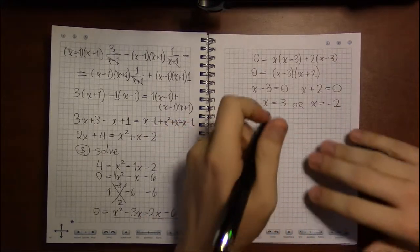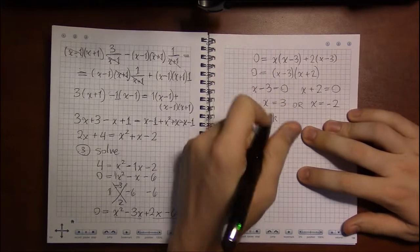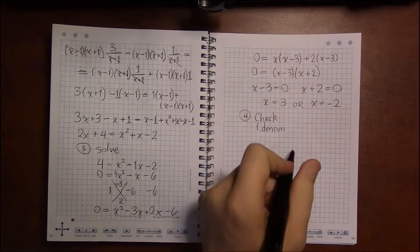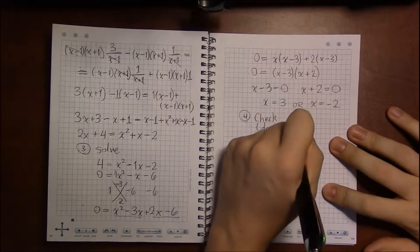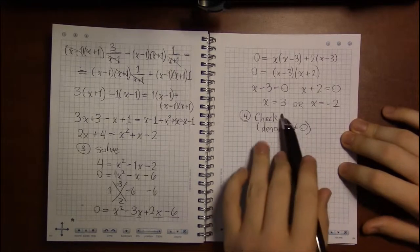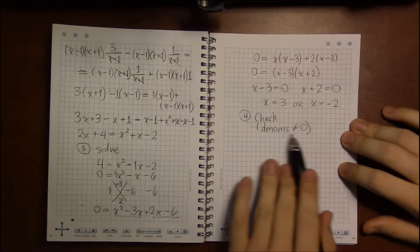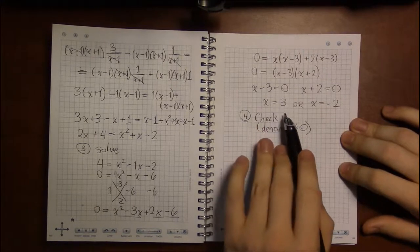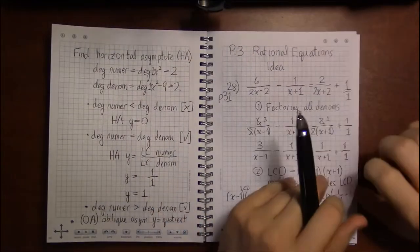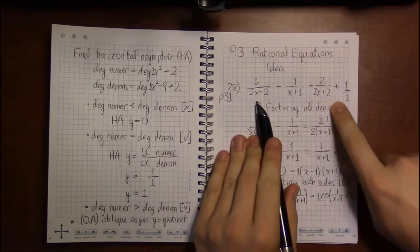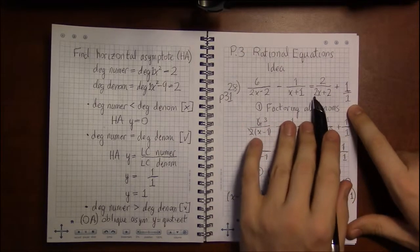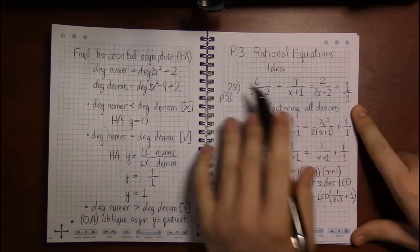But we do need to be rather careful. We need to check, but we don't really need to do a full check like with radical equations. We basically just need to check that our solutions don't make any denominator 0. If one solution makes any one of the denominators 0, that particular solution is out. So 3 and minus 2. Does 3 make any of these denominators 0? 6 minus 2 is 4, no. 3 plus 1 is 4, no. 2 times 3 is 6 plus 2 is 8, nope. And 1 is not 0, so 3 works.